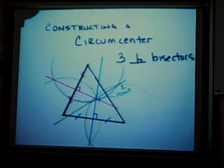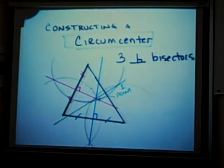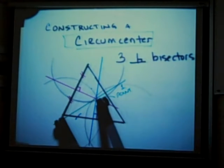And in fact, when you're given three perpendicular bisectors like that, that point is called the circumcenter. And what that means is that it is the center of a circle.